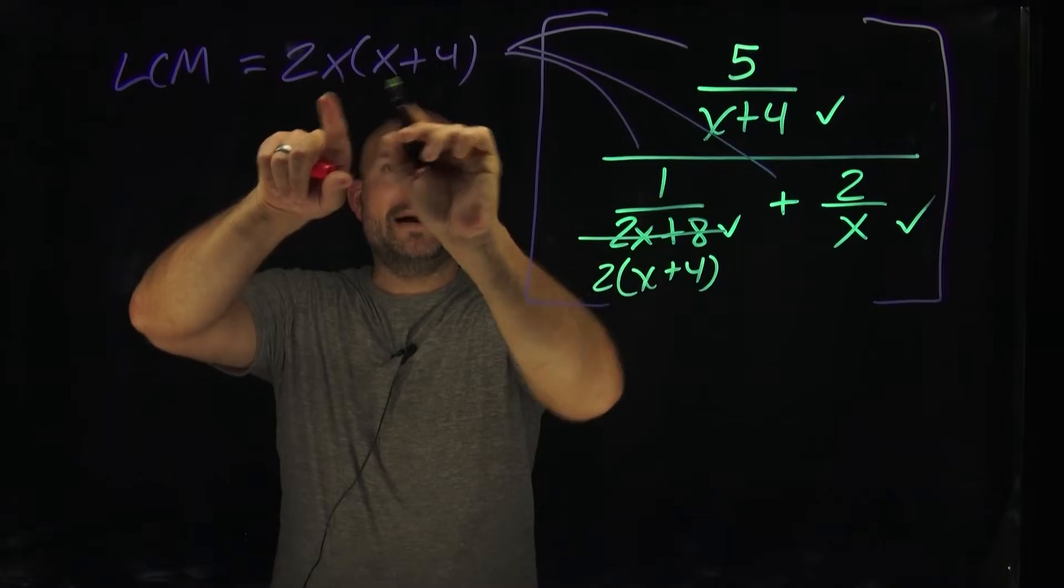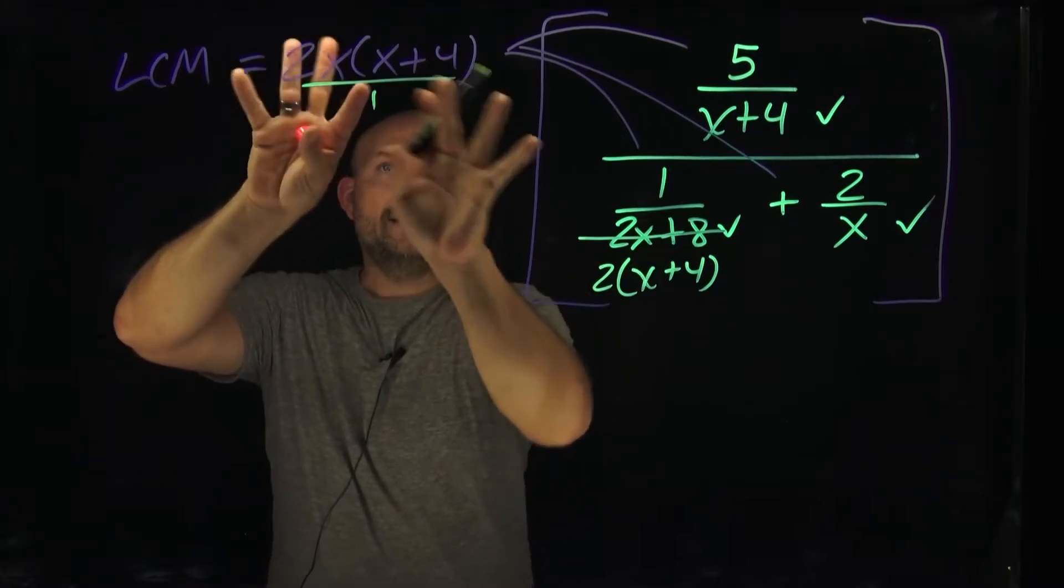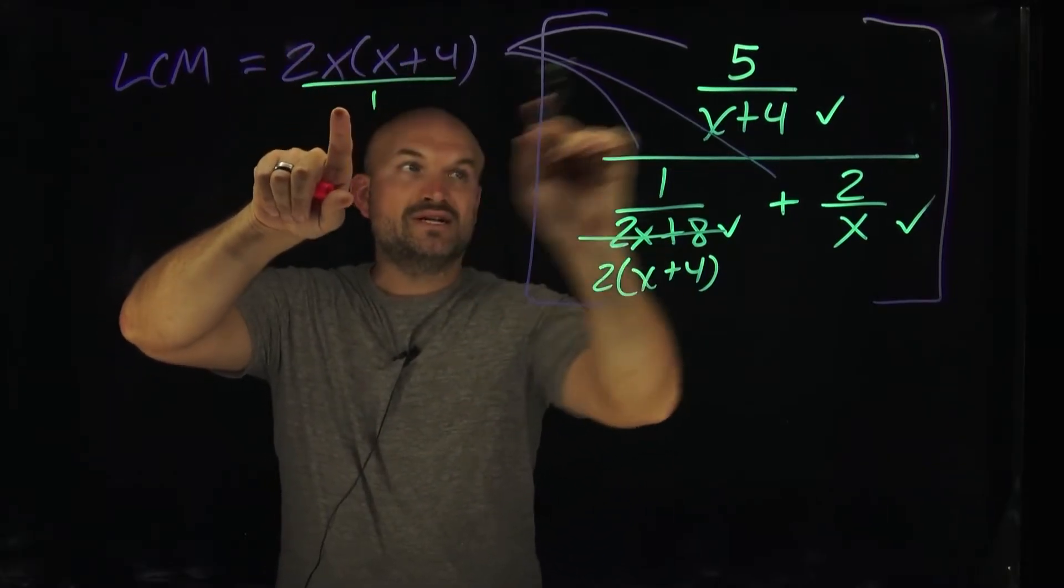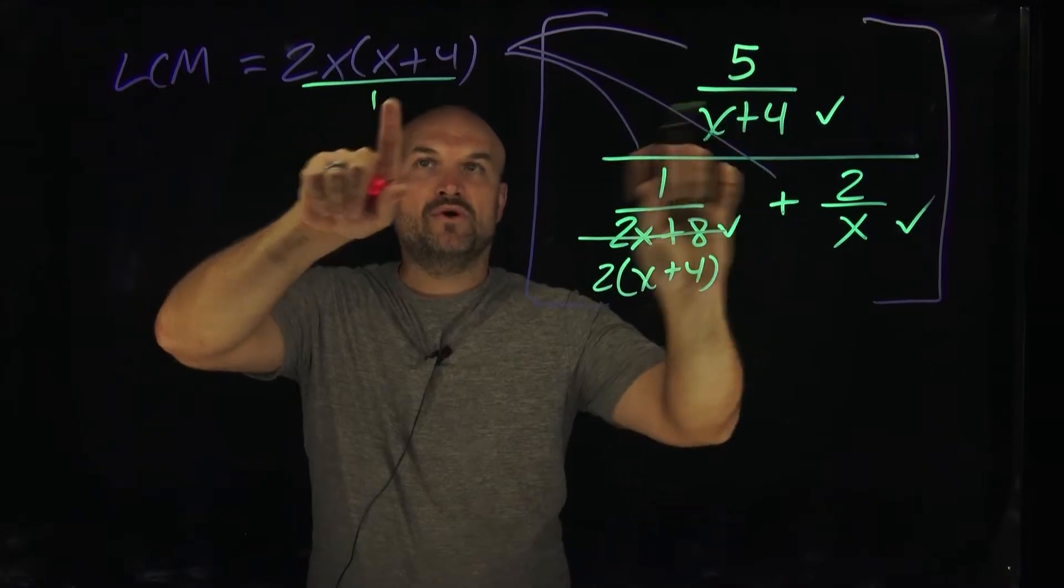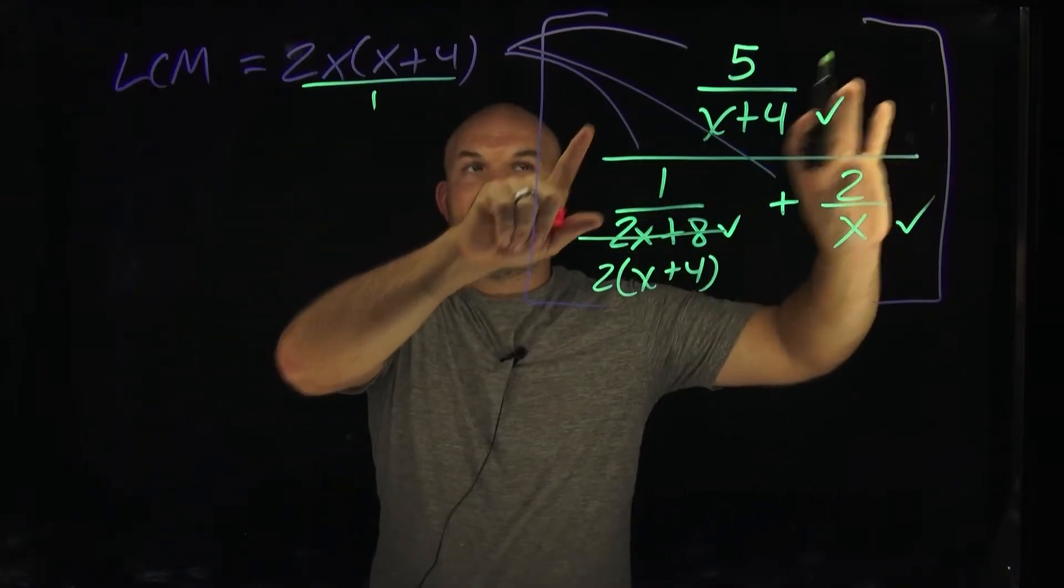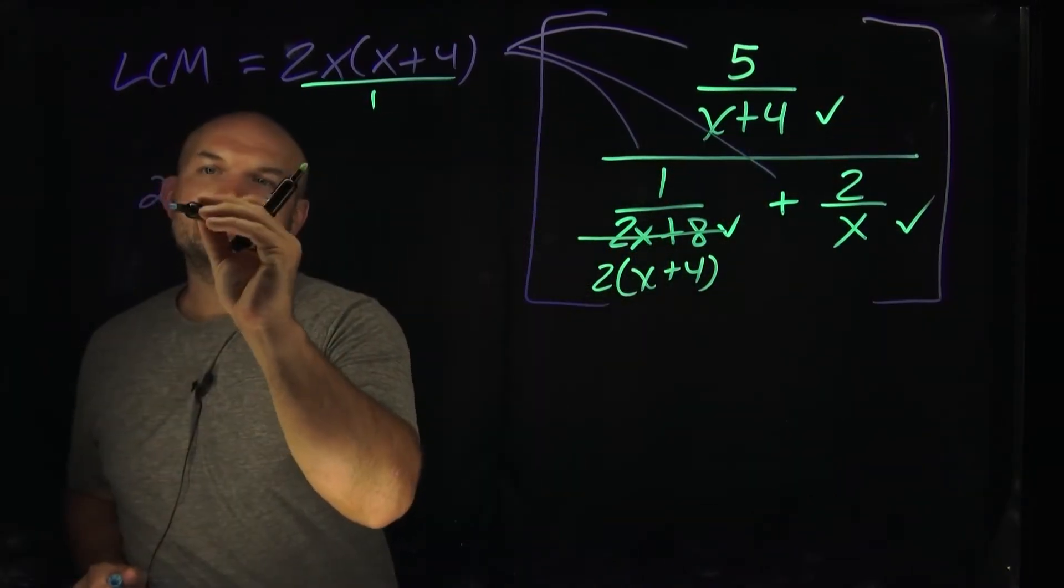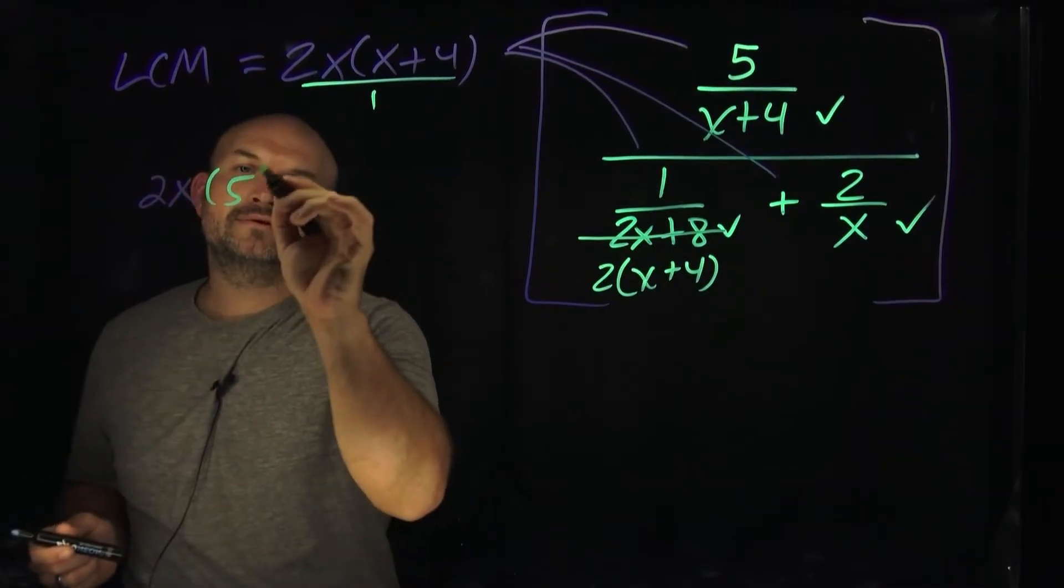So when I multiply a 2x, remember, this is technically over 1, right? So I multiply 2x times x plus 4 times the 5 over the x plus 4. The x plus 4s are going to divide out. And that's going to leave me with a 2x times 5.